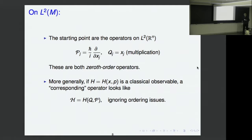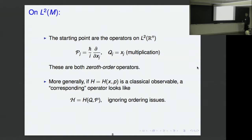More generally, if you have a classical observable in X and P, there is a corresponding operator obtained by replacing x's by Q's and partial derivatives by P's — with ordering issues. Rⁿ has the Weyl quantization, which is the best of them all. I will be talking about the principal symbol level, at which ordering issues do not matter, so I will ignore that completely.